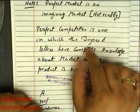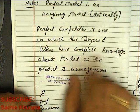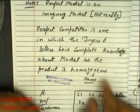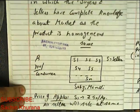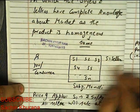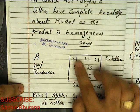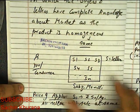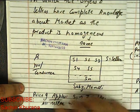Perfect competition is one in which the buyers and sellers have complete knowledge about the market, and the product is homogeneous — homogeneous means the same. There are a large number of buyers and sellers. For example, in a sabzi mandi (vegetable market) you have many options: seller 1, seller 2, seller 3, and so on.